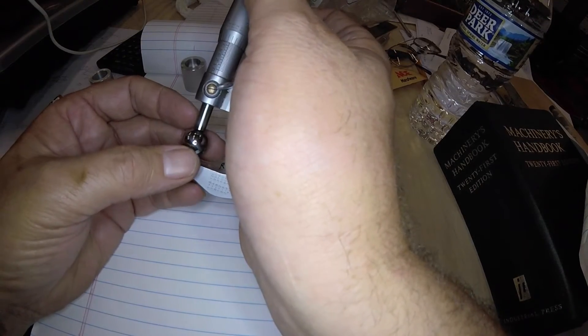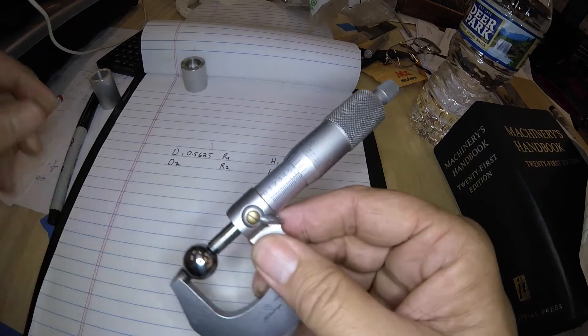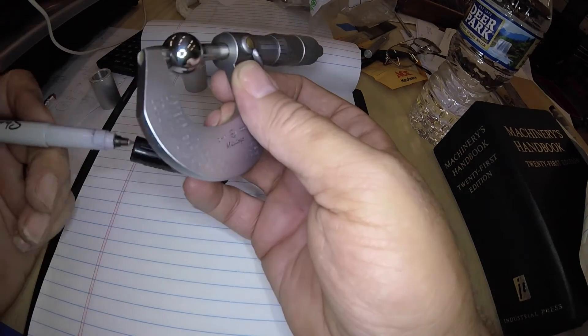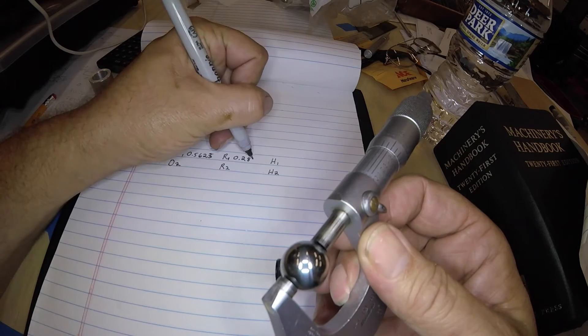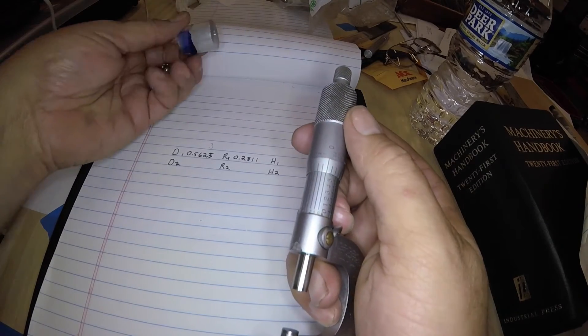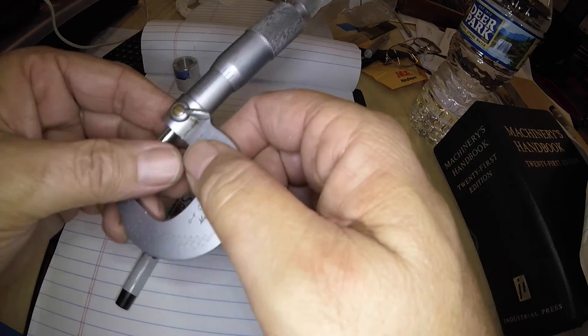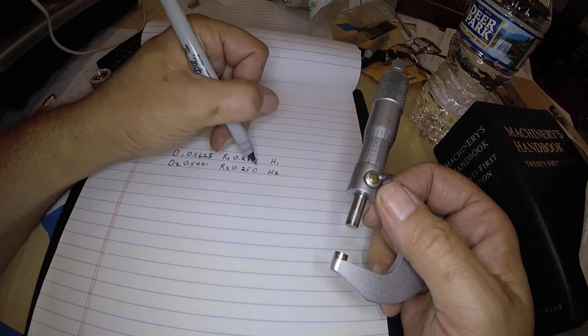So, let's measure the ball diameter one. That zeros. I'm going to go at two, three. 0.5623 is the large ball. So that will make the radius 0.281. I'll just round it down because it was closer to two, I think. 0.2811. The smaller ball: 0.5001. So half of that is 0.25, I'm just going to call it 0.250.